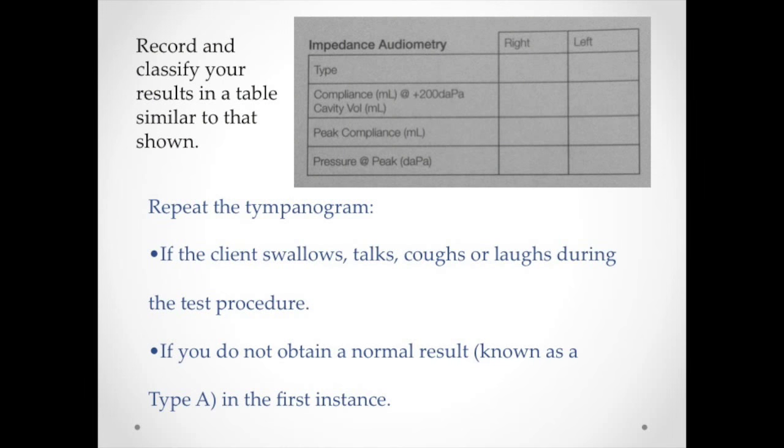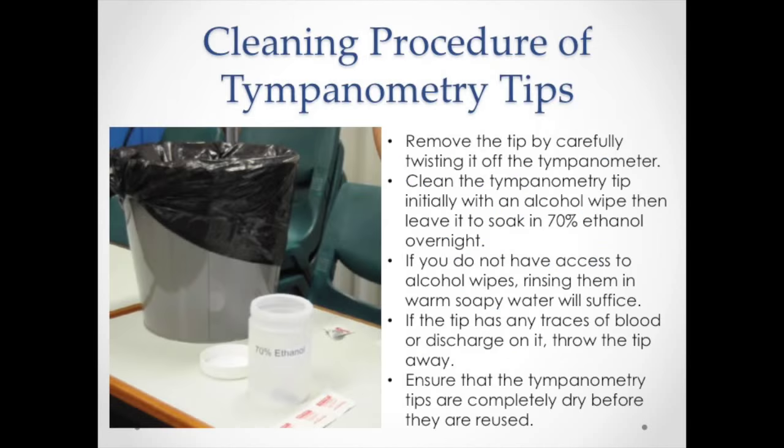Once you've obtained a tympanogram, record and classify your results. Repeat the tympanogram if the client swallows, talks, coughs, or laughs during the procedure, or if you do not obtain a normal result — known as a type A tympanogram — in the first instance. Once you've completed tympanometry, remove the tip from the tympanometer, clean it using an alcohol wipe, and leave it to soak in ethanol before it's reused.